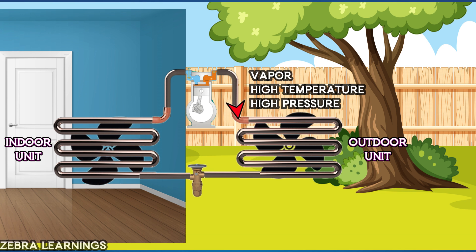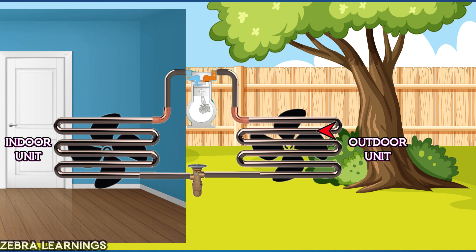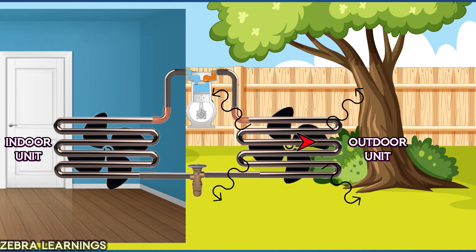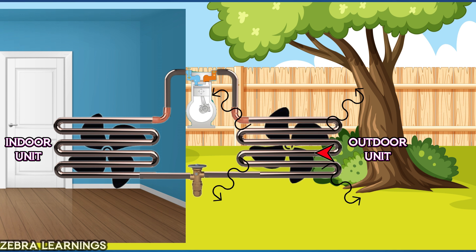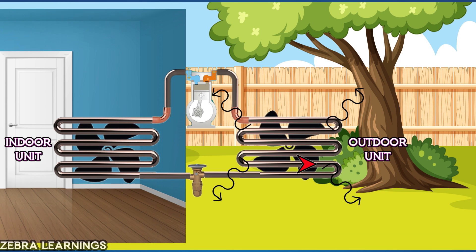The refrigerant then enters the condenser coil at high pressure, high temperature, and vapor stage. The fan motor behind the condenser coil blows air over the coil and releases all the heat from the refrigerant to the outside. This reduces the temperature of the refrigerant and converts it from the vapor stage to the liquid stage.